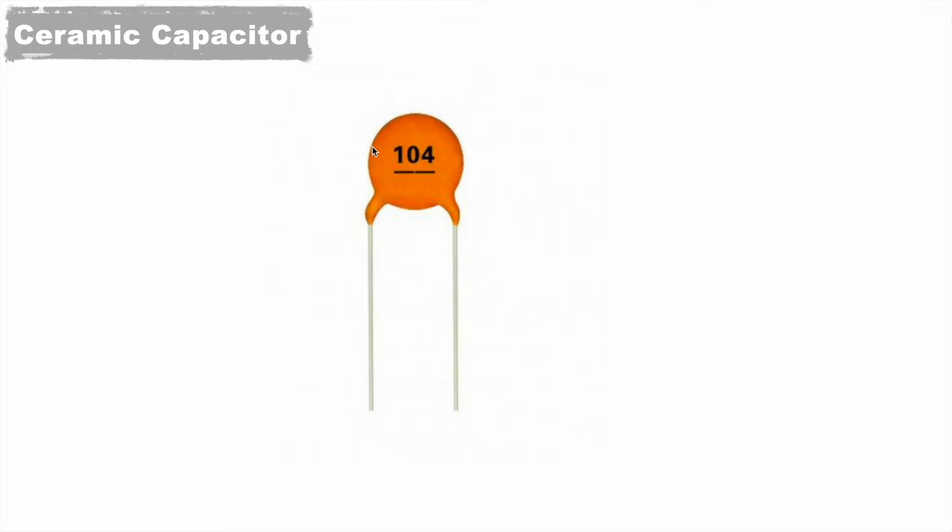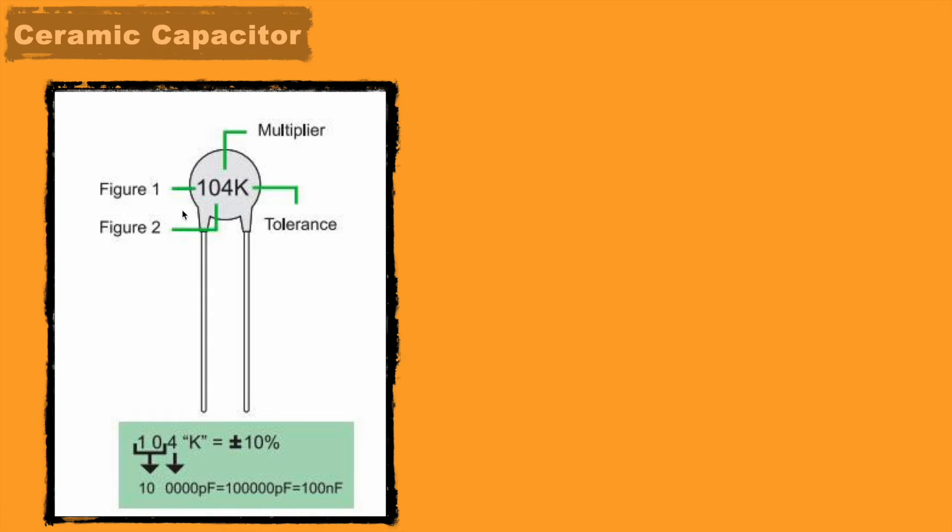Next, ceramic capacitor. This kind of three-digit coding is present on ceramic capacitors, whose value we can derive in this way. Its first two digits: one is the first digit, zero is the second digit, gives us the number 10. And the third digit 4 is the multiplier value.